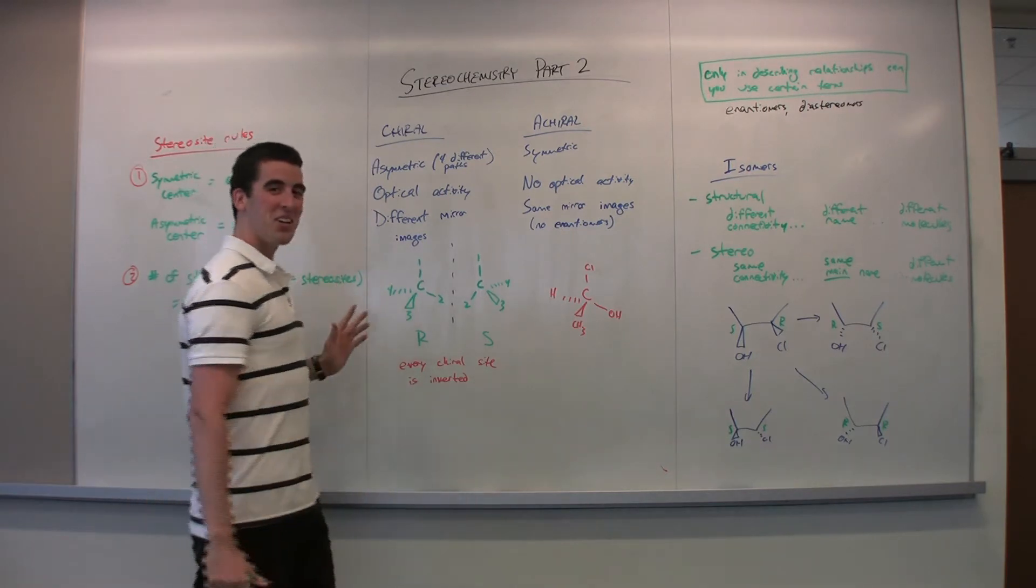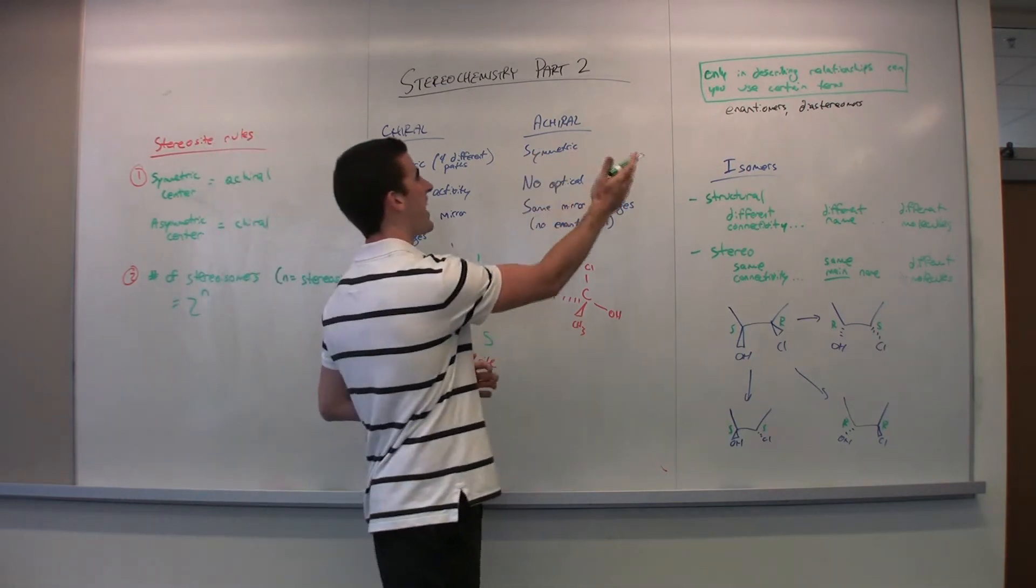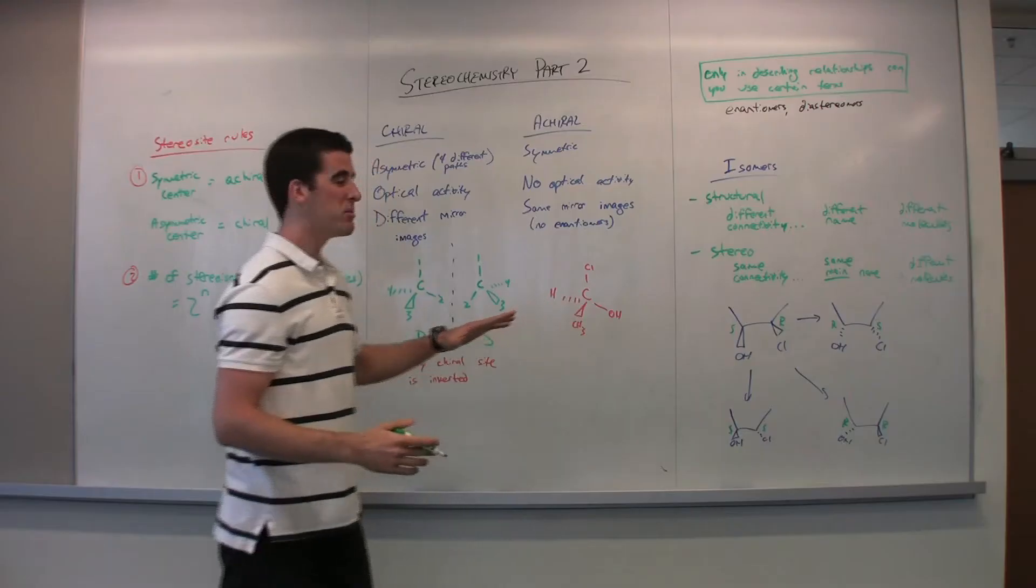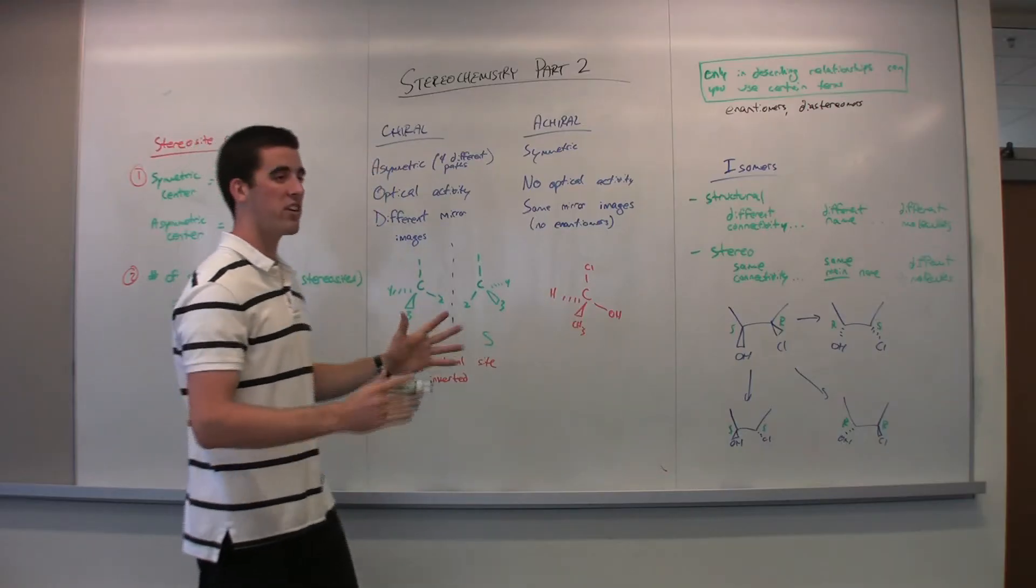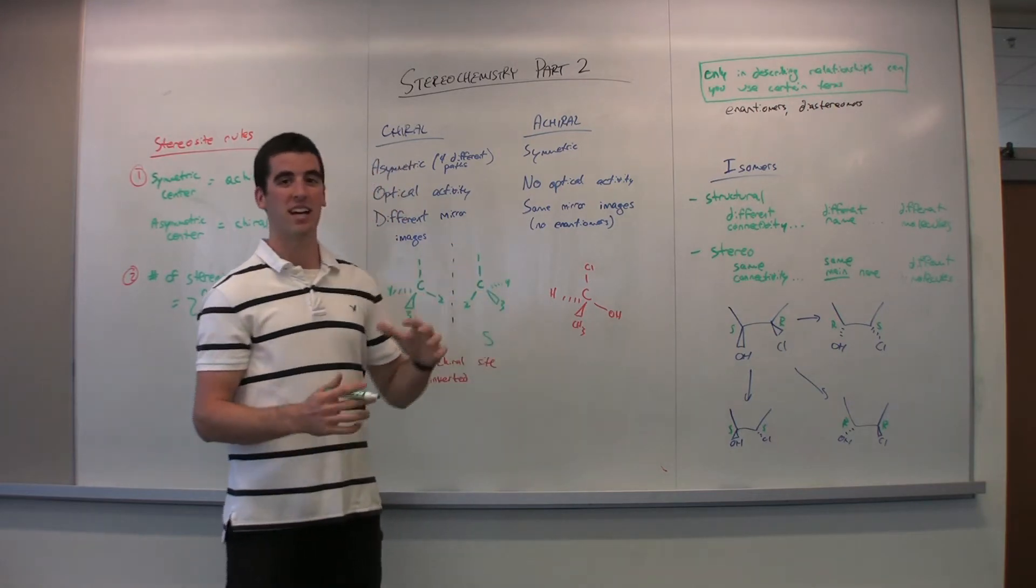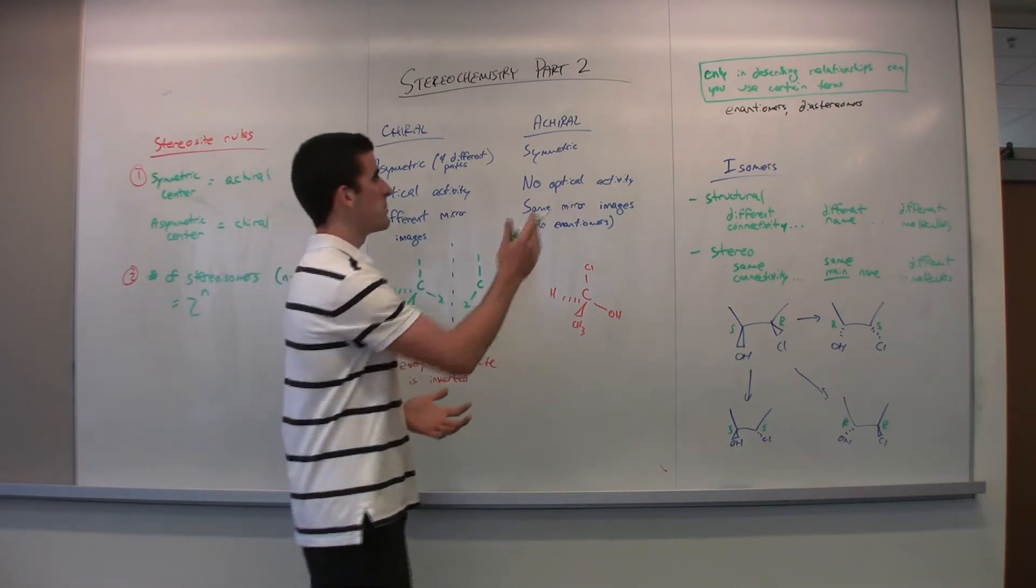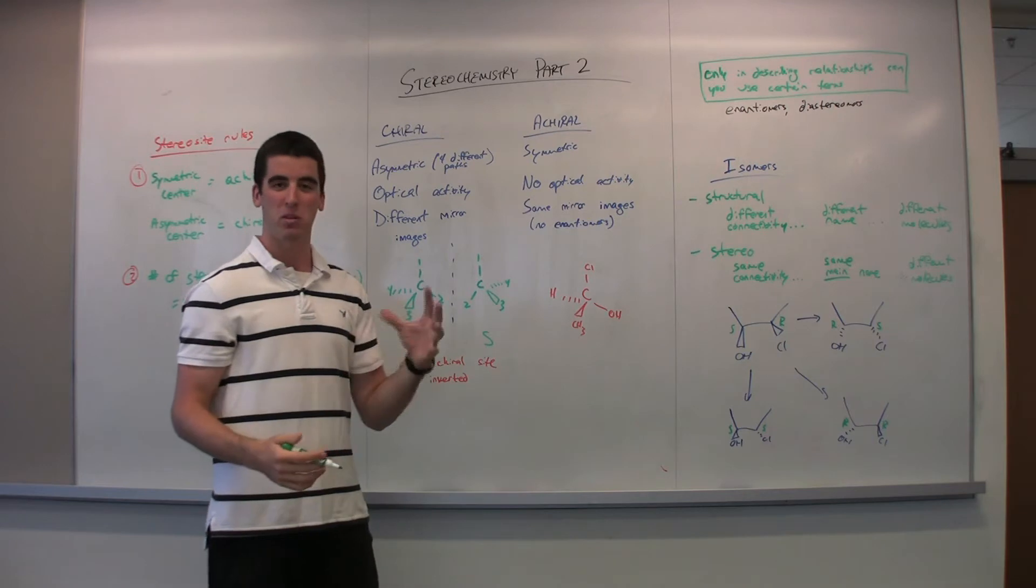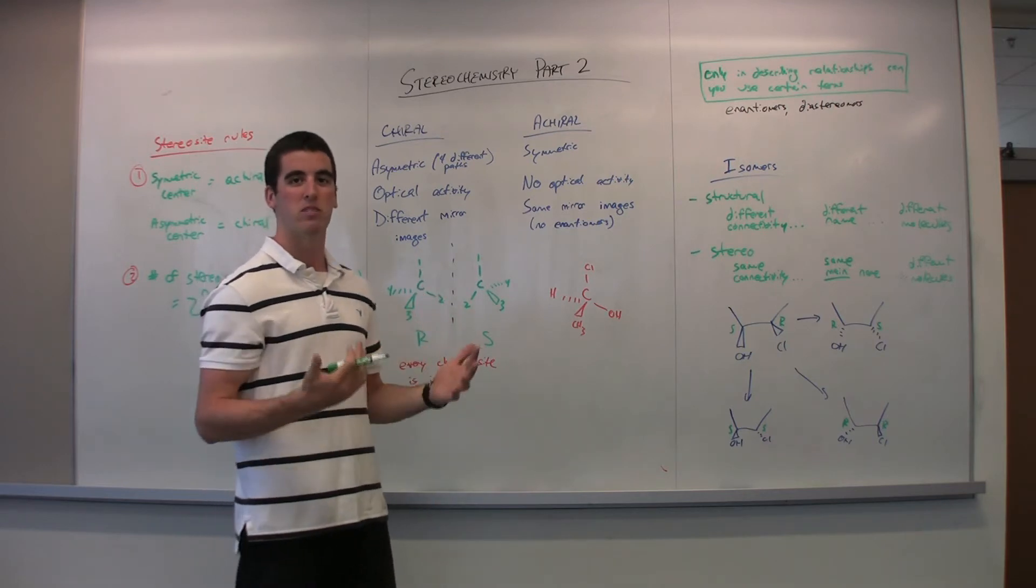Going onward from stereosites, I've written down the rule here. It's just a phrase. Only in describing relationships can you use certain terms. So I mentioned enantiomers early on here. And there are two sort of designations when you're talking about stereoisomers. Enantiomers and diastereomers. Enantiomers refer to these mirror images of each other. They're completely opposite. So if there's a chiral site, if it's R, then the complete opposite is the S. So they're enantiomers of each other. So remember, only in describing relationships can you use those terms. You can't say something that's just an enantiomer. It's the enantiomeric pair. There's always two involved. They're the enantiomer of each other.